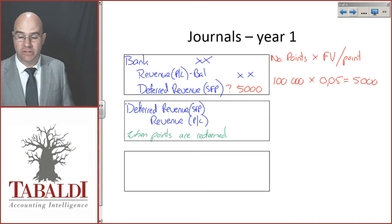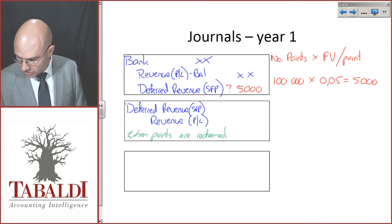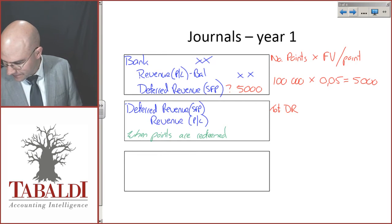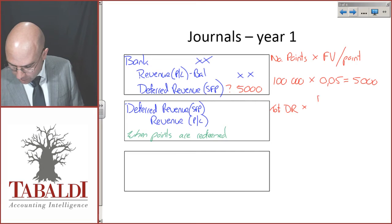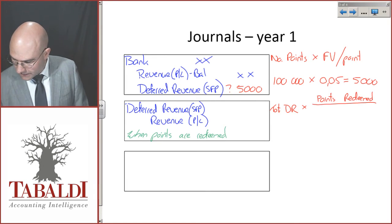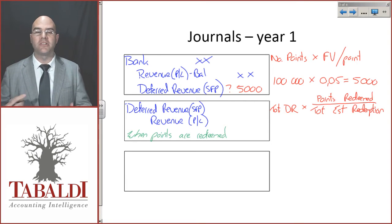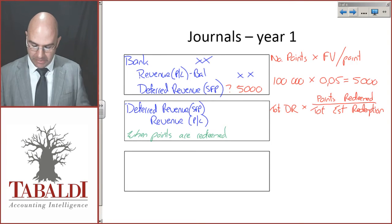The trick is how much. Here we're going to take the total deferred revenue—I'll just write DR for deferred revenue—times by the points redeemed during the year, divided by the total estimated redemption. So not divided by the 100,000 total points, but the total number of points we estimate will actually be redeemed.